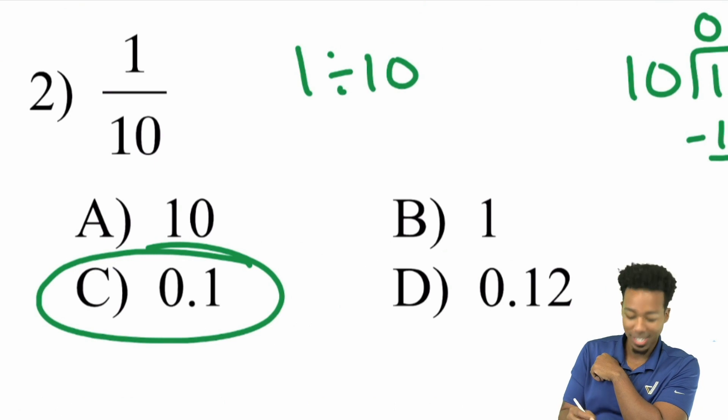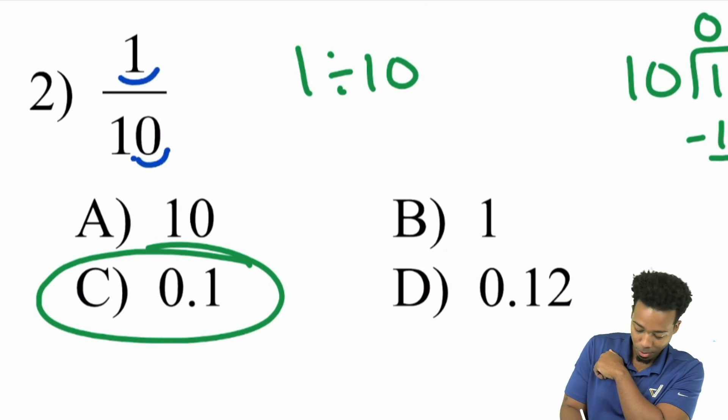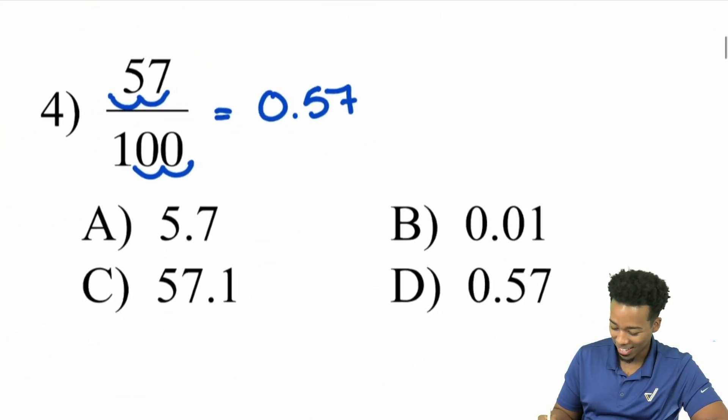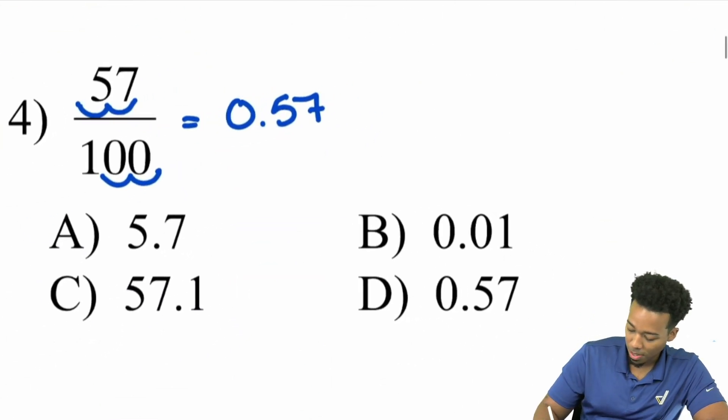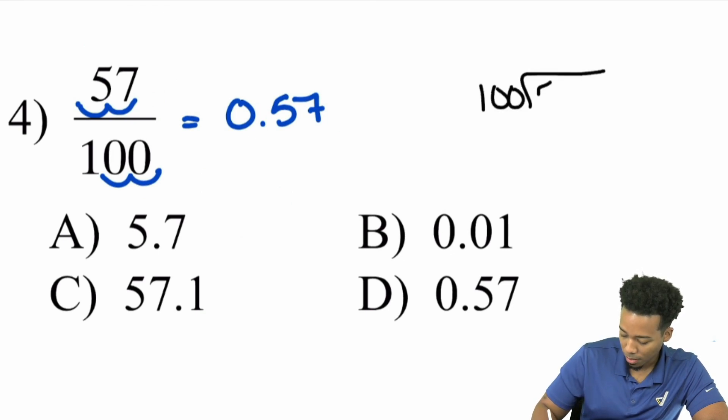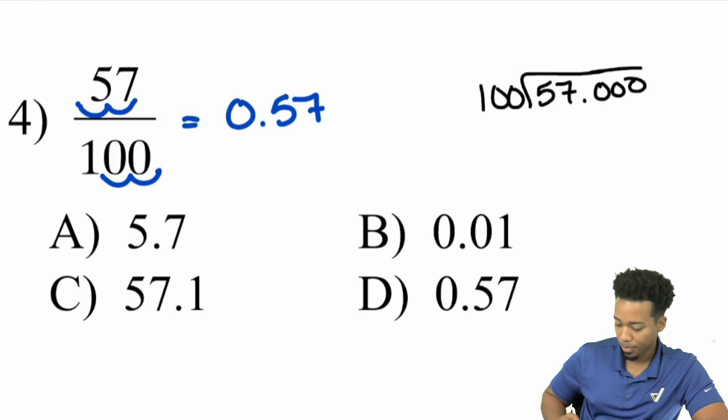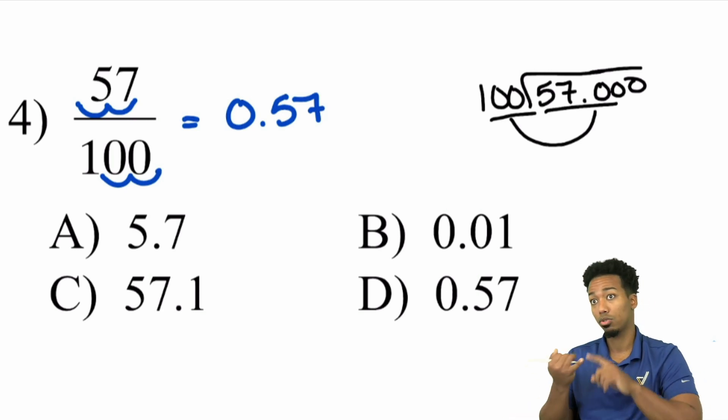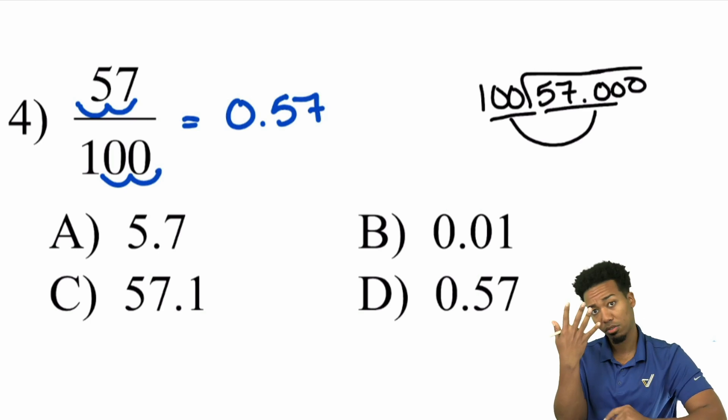So again, let me show you this one here. Let me show you how this works. So I'll divide by the 100 in the traditional way. So 100 going into 57. So 100 can go into 5, can go into 57, but it can go into 570. How many times? That'll be five times because 100, 200, 300, 400, 500, five times. So I'll go ahead and write that right here. Don't forget your decimal.